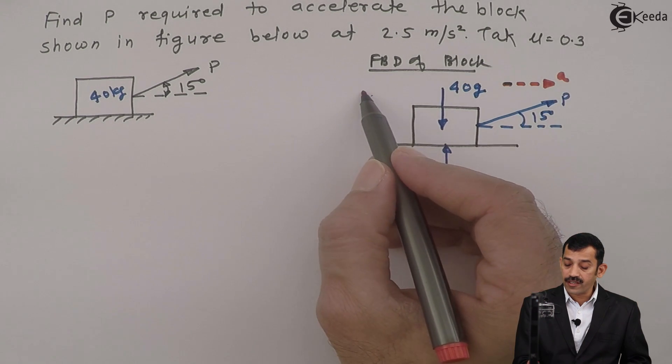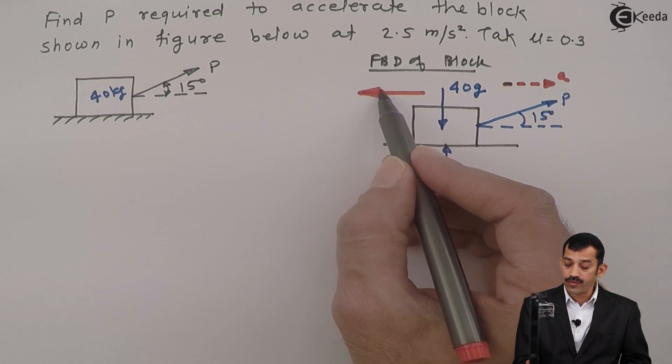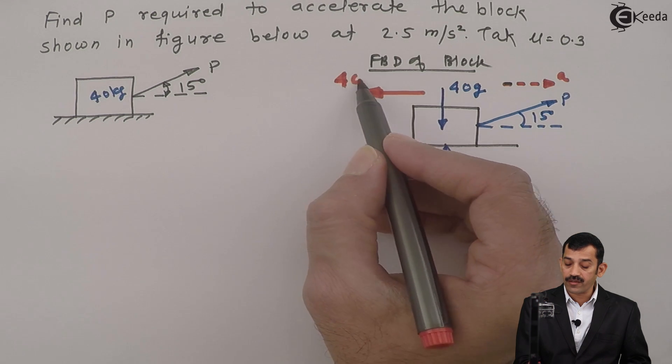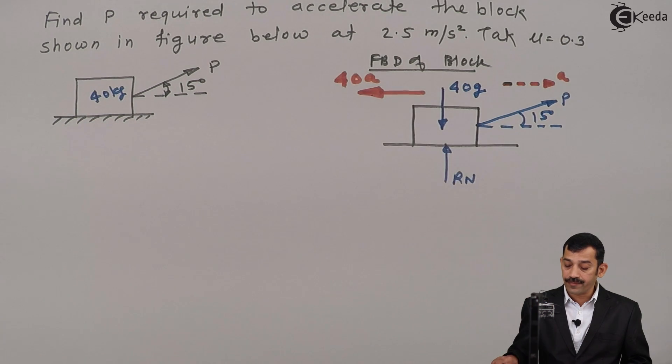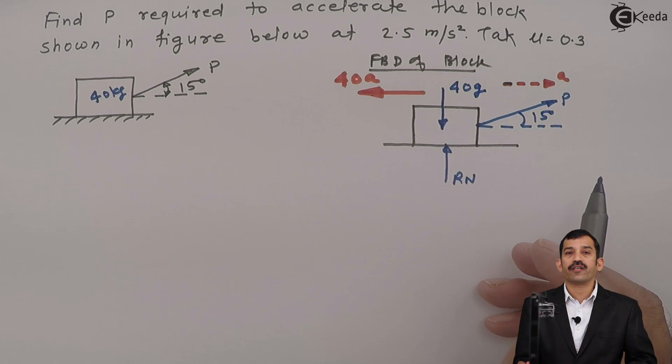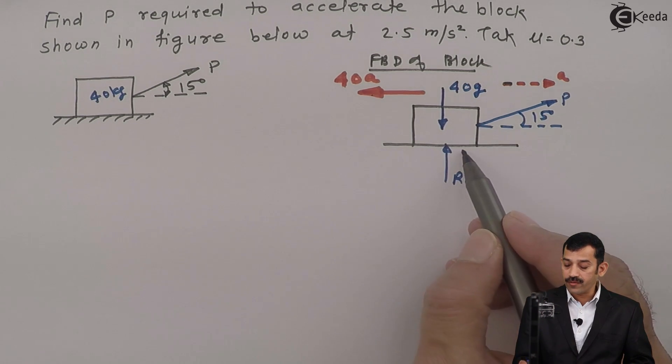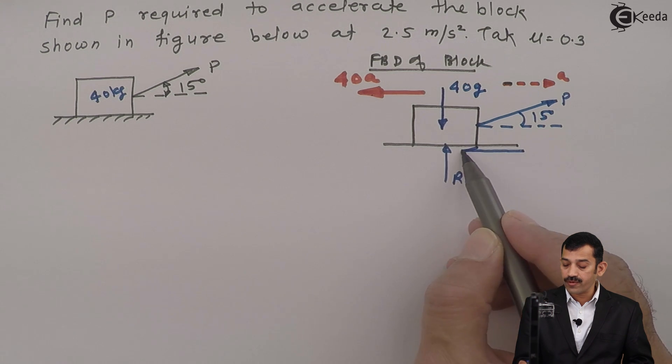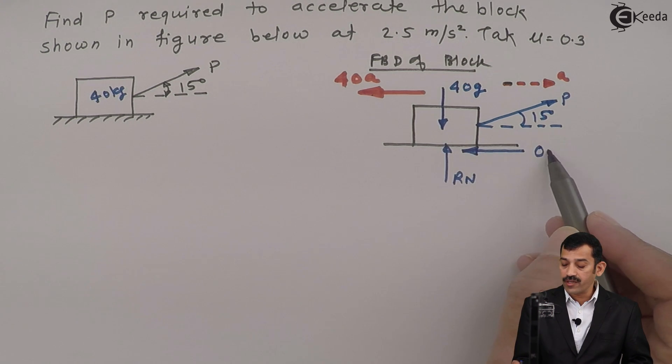If acceleration is rightward, inertia force is leftward. Mass is given as 40 kg, therefore 40A. As the body accelerates rightward, frictional force acts in leftward direction. This frictional force: μ is given as 0.3 and this becomes Rn.